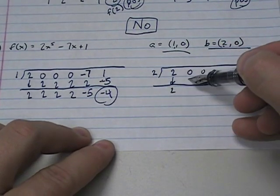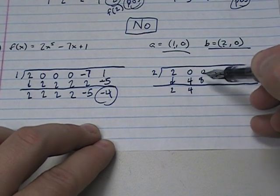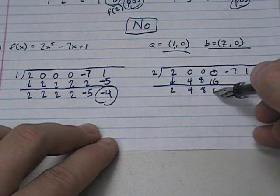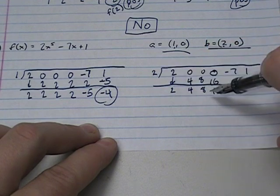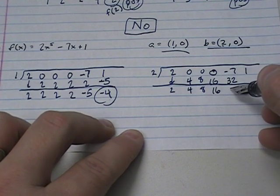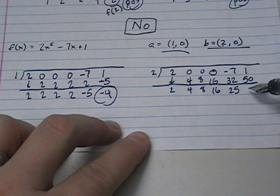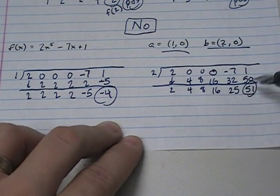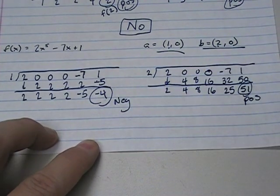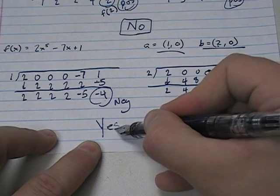Here, copy. 2 times 2 is 4. And then 0 and 4 make 4. 2 times 4 is 8. So 0 and 8 make 8. 2 times 8 is 16. 0 and 16, you add together, get 16. 2 times 16 is 32. And then 32 minus 7 is 25. And then 2 times 25 is 50. 50 plus 1 is 51. So this is negative. This is positive. They have changed signs. And so is there a root between a and b? And the answer is yes.